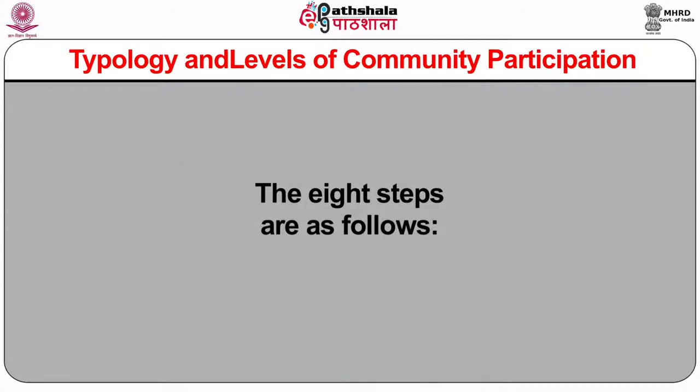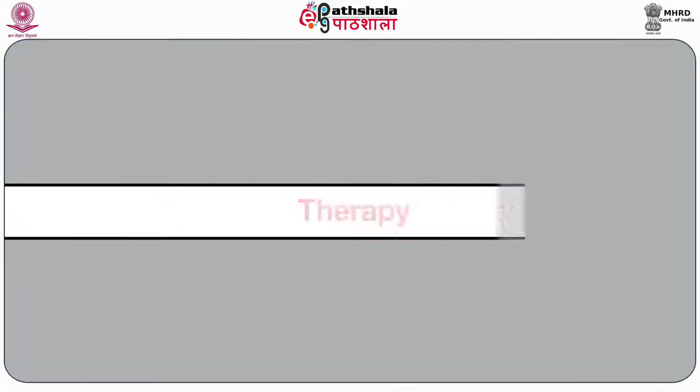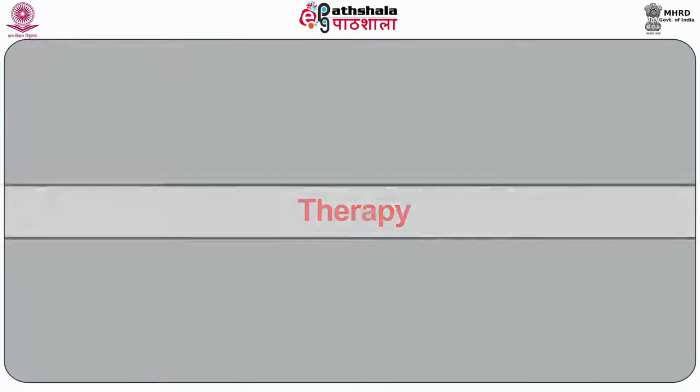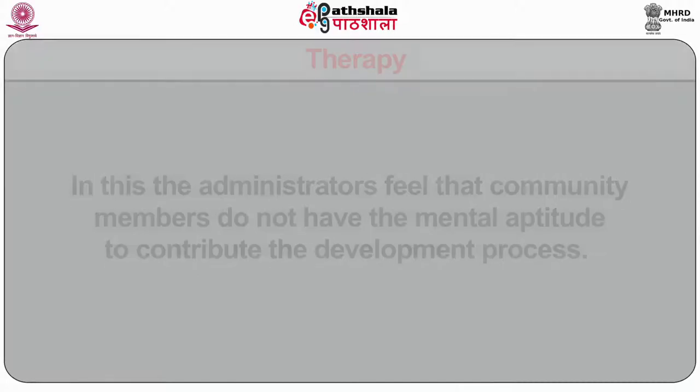The eight steps are as follows. The first one is manipulation. This is a stage where citizens or community members are not involved in the planning and development process. The policy makers have no mechanism to seek the inputs from the community members for tourism development in their region. The second one is therapy. In this, the administrators feel that community members do not have the mental aptitude to contribute to the development process.